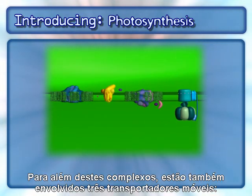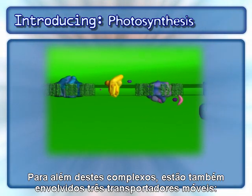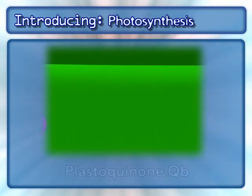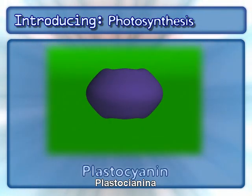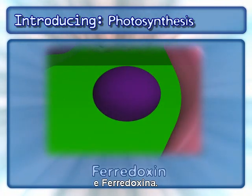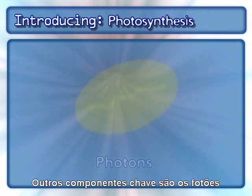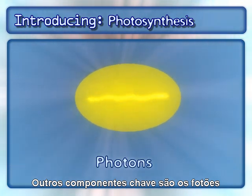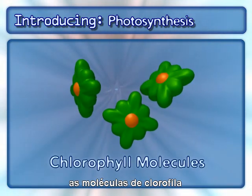In addition to the complexes, three mobile carriers are also involved: plastoquinone QB, plastocyanin, and ferredoxin. Other key components include photons and chlorophyll molecules.